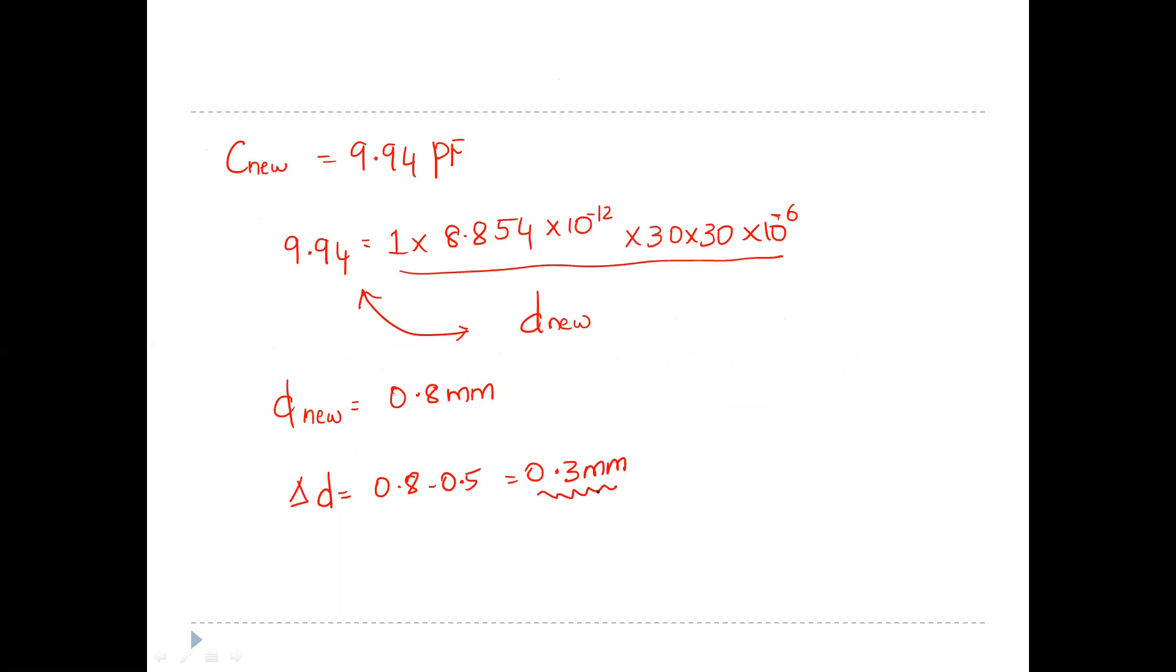They have also asked to find the sensitivity of the device. Sensitivity is change in output by change in input. Here the change in output is 6 picofarad and change in input is 0.3 mm, so that will be 20 picofarad per mm.